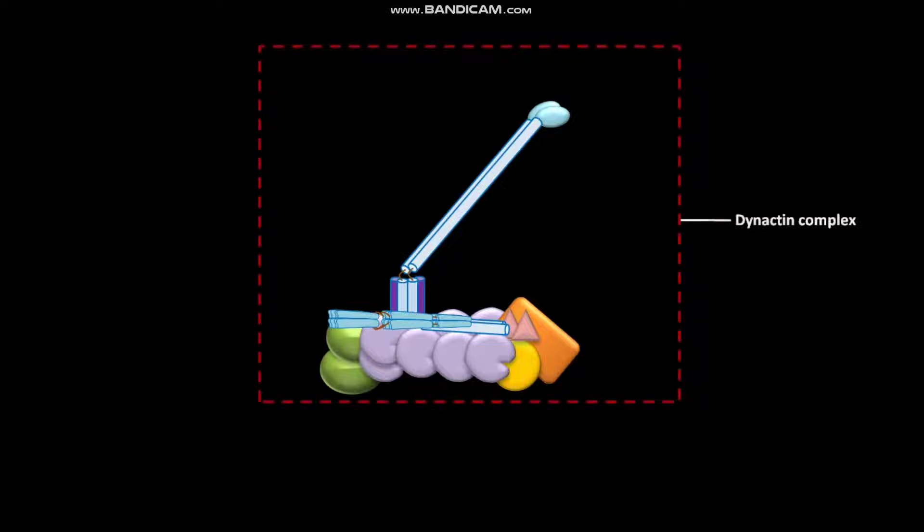The dynactin complex has two domains. Domain 1 of dynactin complex is built around a short filament or ARP1 polymer.